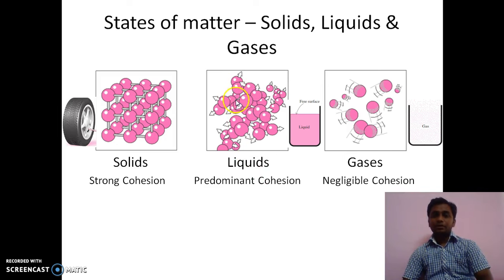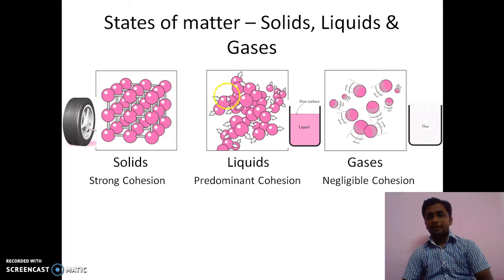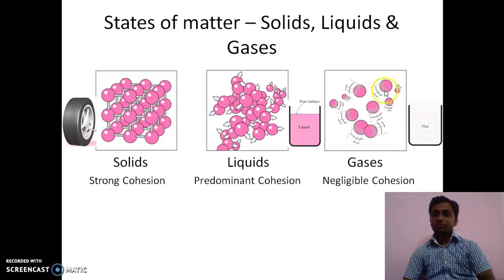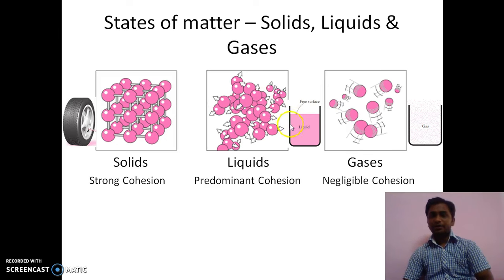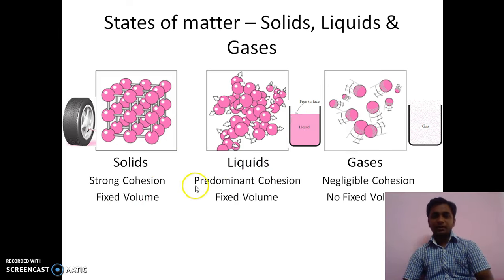In liquids, the intermolecular forces of attraction are medium — not as strong as in solids — so the molecules stay together. Because these forces are not the strongest, when force is applied the molecules can easily move, giving liquids a flowable nature. In gases, cohesion is negligible and there is no intermolecular force of attraction, so a gas poured into a container will occupy the entire space. Liquids and solids have a fixed volume, whereas gases do not.